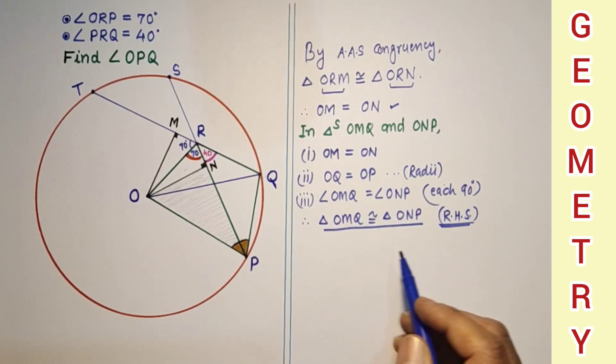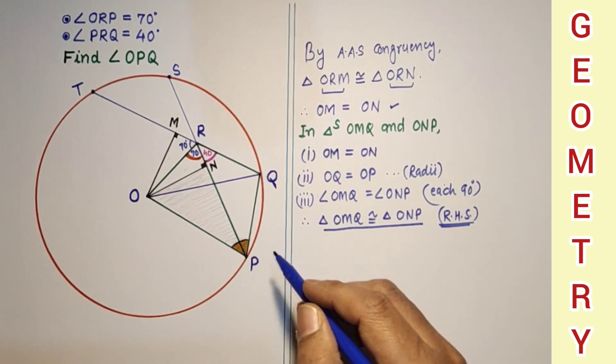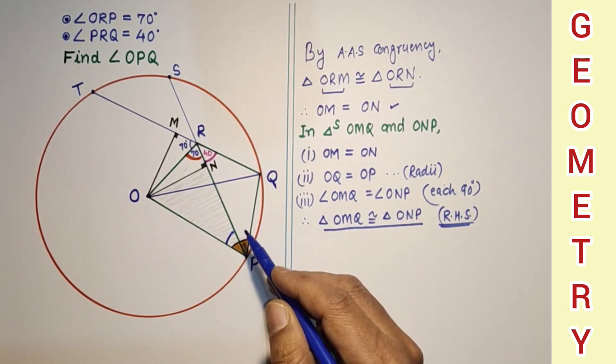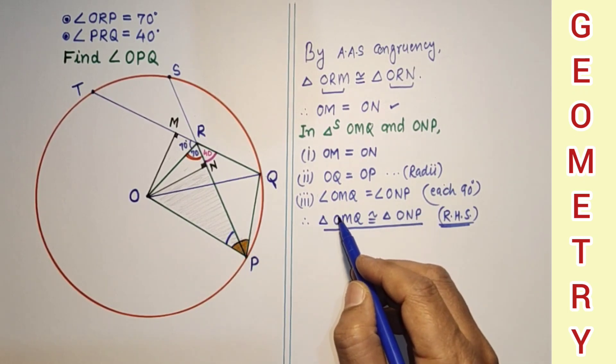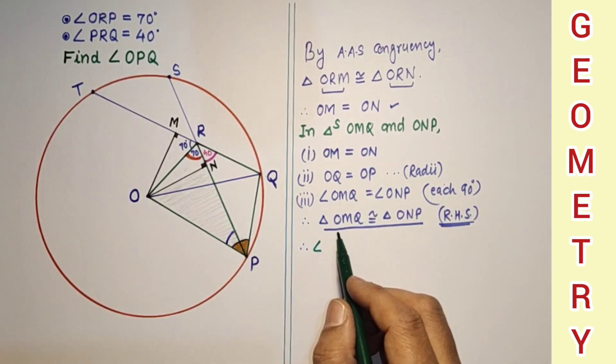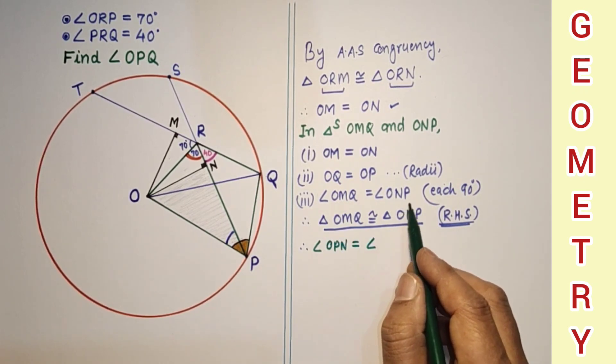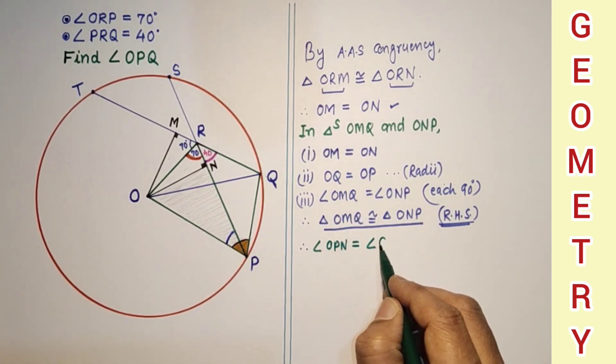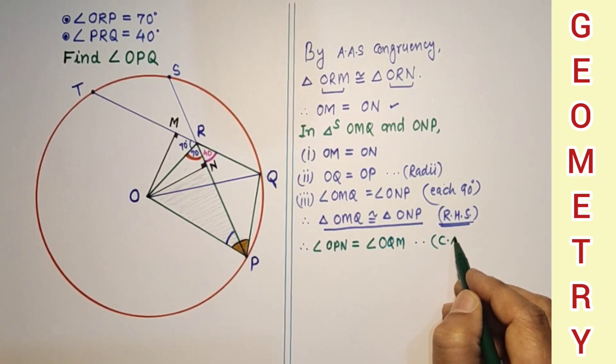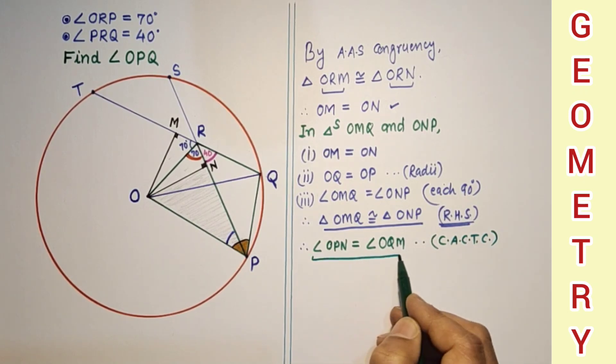After proving that these two triangles are congruent, we can say that corresponding angles, corresponding angle of OPN is equal to angle OQM. So therefore angle OPN is equal to angle OQM, corresponding angles of congruent triangles are congruent. We found this result.